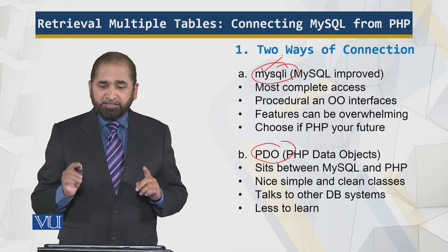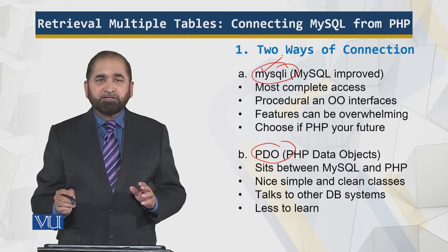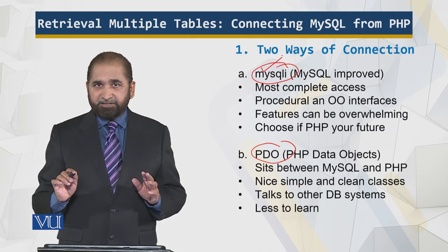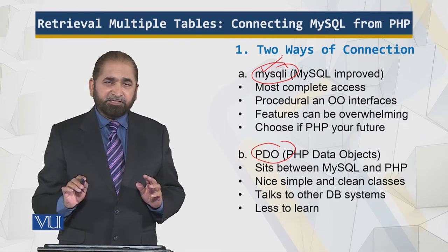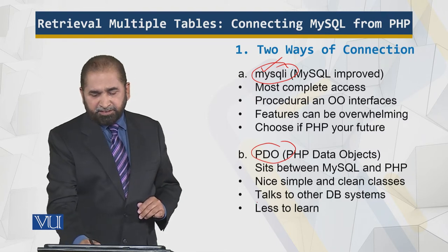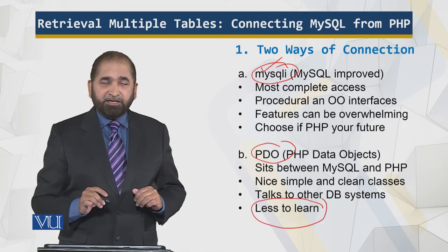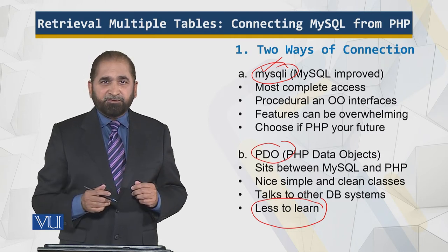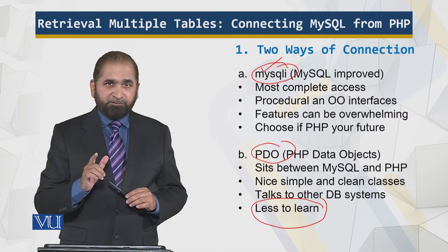The other approach is PDO — PHP Data Objects — which sits between the MySQL server and the PHP engine. It has nice, simple, clean classes, and you can do a lot with less learning. It also talks to different databases — the big three databases. These are the differences between the two approaches.